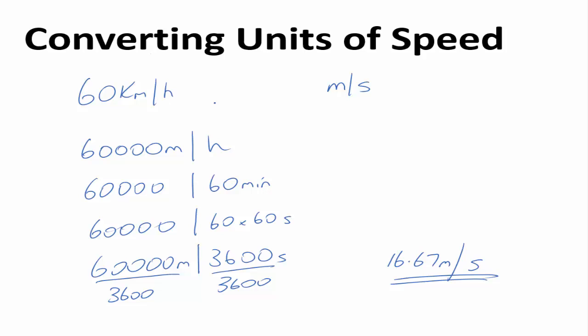So to actually convert between kilometres per hour and metres per second, it is as simple as dividing by 3.6, the magic number. So if you take 60 and divide by 3.6, you'll get this measurement, and you don't need to remember any of this.